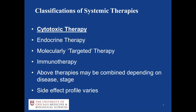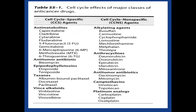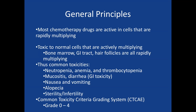I want to briefly touch on cytotoxic chemotherapy — you'll see more of this in pharmacology with colleagues like O'Donnell next year. Old school, when I was in medical school, this is what we had in terms of pharmacology for cancer — a lot of old school IV chemotherapies. They work through the cell cycle, either inhibiting DNA synthesis during the cell cycle or inhibiting cell division. Some drugs were cell cycle independent, such as platinum and alkylating agents.